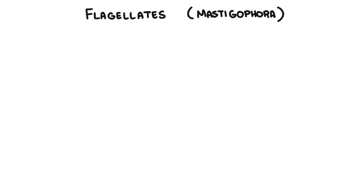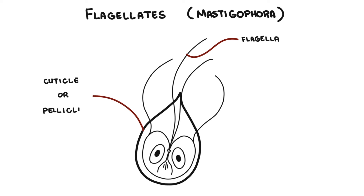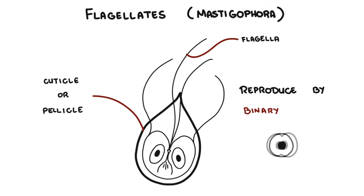The next group of protozoan parasites are the flagellates, the mastigophora. As the name suggests, they have flagella that help them with movement. Their body is covered by something called a cuticle or pellicle. They are oval in shape, and reproduction is again by binary fission.